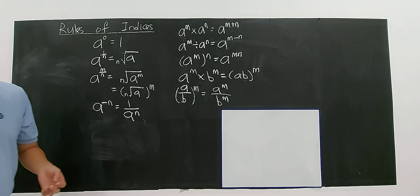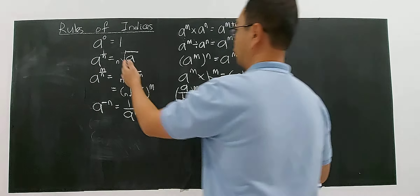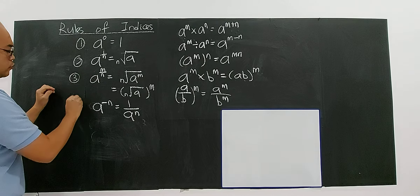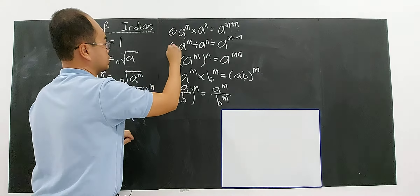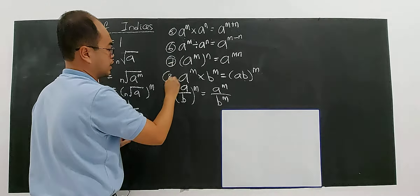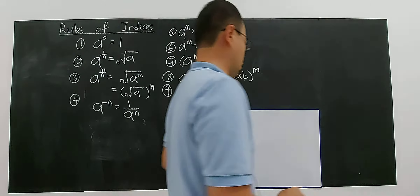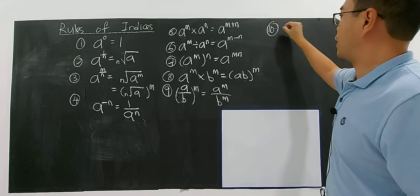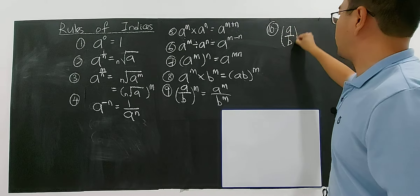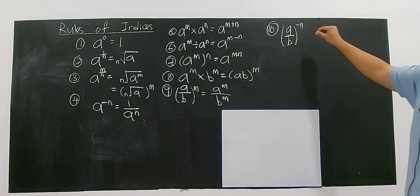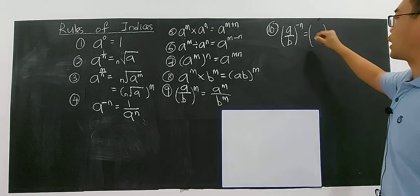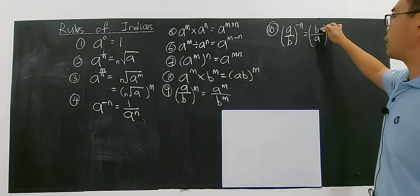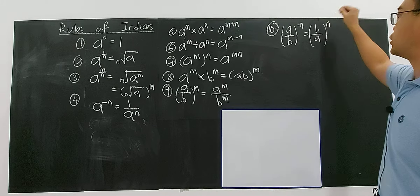I have summarized all the important index laws for you — there are nine rules in total. One more rule: if you have A over B to the power of negative N, you can reverse or flip the fraction so that A over B becomes B over A, and the power becomes positive.